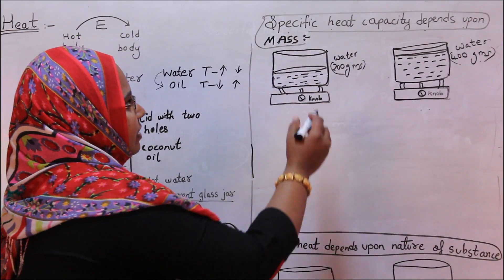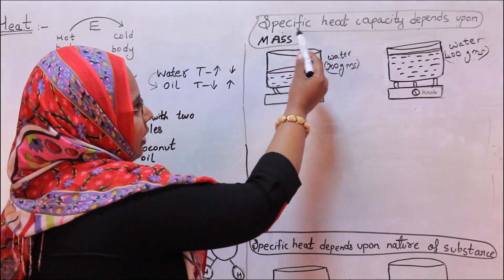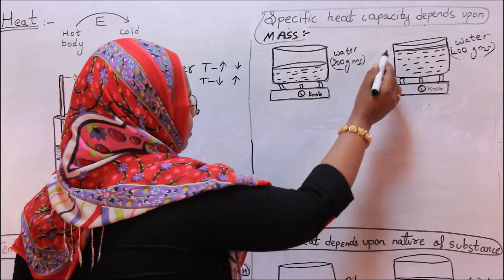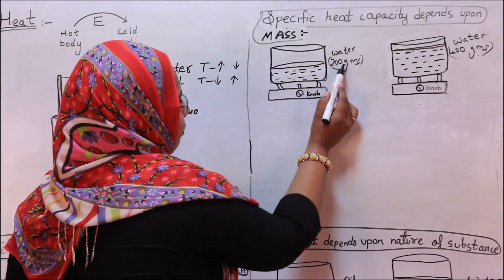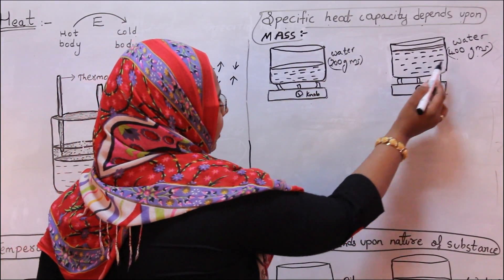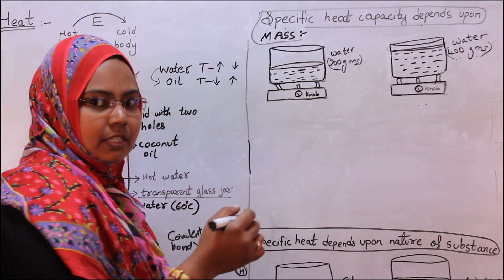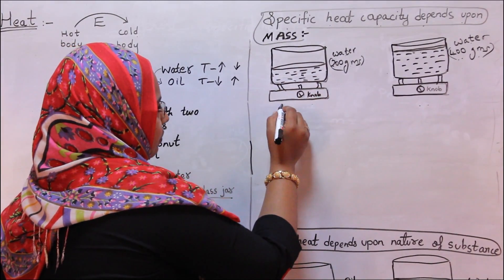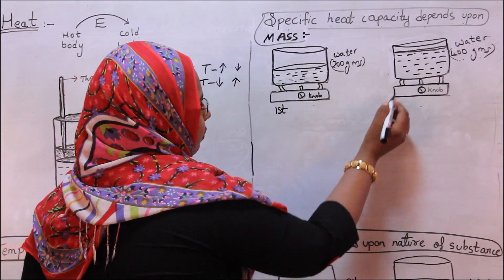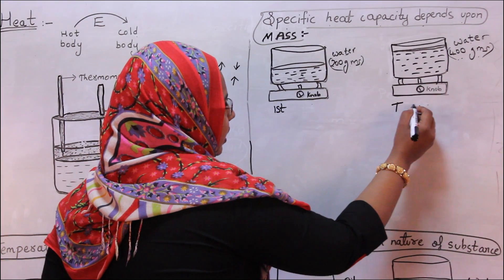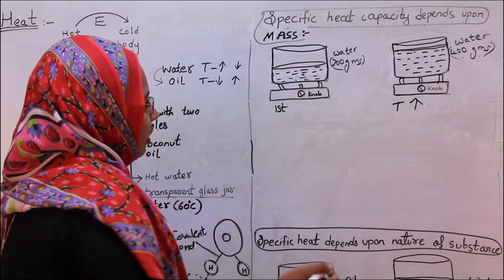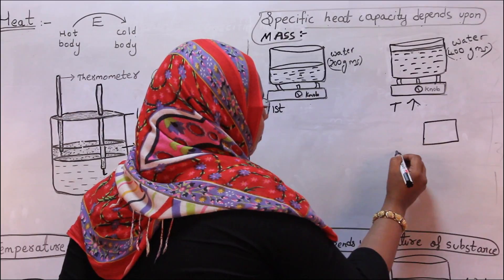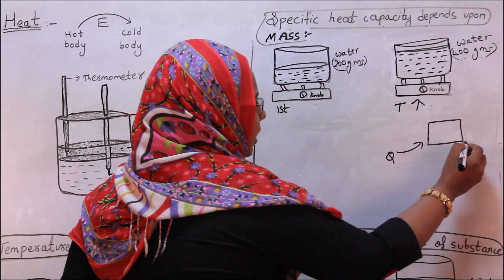Now let's discuss specific heat capacity. Specific heat capacity depends upon mass. Take two identical pans — one filled with 200 grams of water and the other with 400 grams of water. The pan with less water boils first, and the one with more water takes more time to increase in temperature. From this we can conclude that the greater the mass, the more heat must be supplied for the same change in temperature.